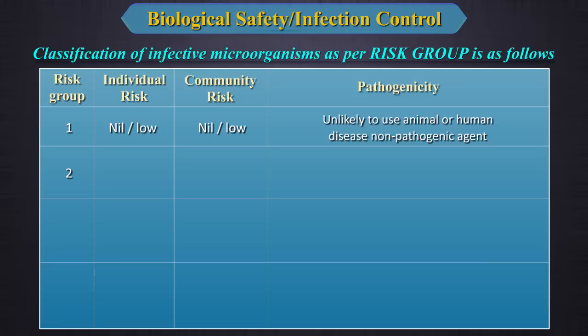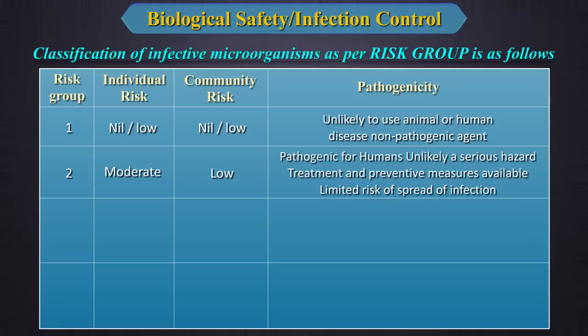Risk Group 2 is where the individual risk is moderate and the community risk is low. This organism is pathogenic for humans but unlikely to be a serious hazard. Treatment and preventive measures are available and there is a limited risk of spread of infection.